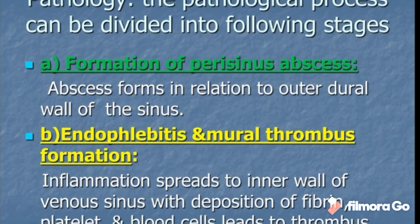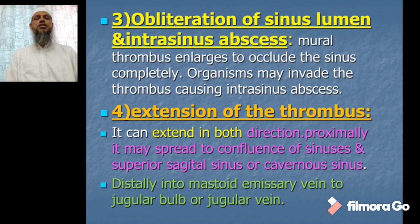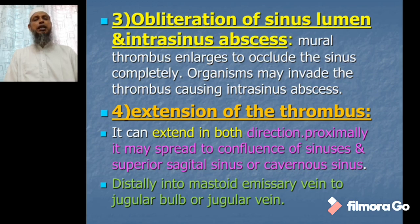In stage three, obliteration of the sinus lumen and intra-sinus abscess: the mural thrombus enlarges to occlude the sinus completely, and organisms may invade the thrombus causing an intra-sinus abscess. In stage four, extension of the thrombus: it can extend in both directions — proximally it may spread to the confluence of sinuses, superior sagittal sinus, or cavernous sinus; distally it extends into the mastoid emissary vein to the jugular bulb or internal jugular vein.